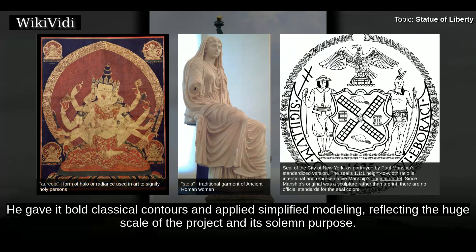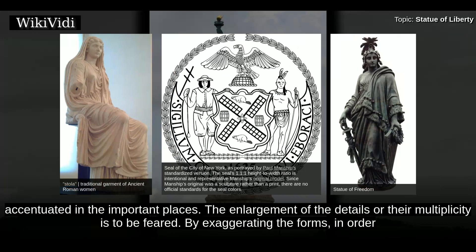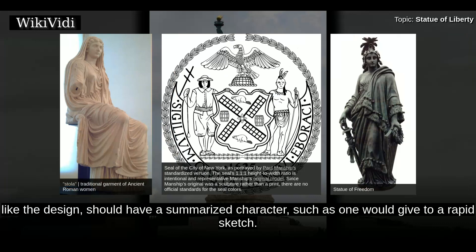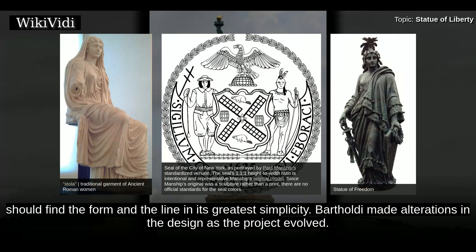He gave it bold classical contours and applied simplified modeling, reflecting the huge scale of the project and its solemn purpose. Bartholdi wrote of his technique: 'The surfaces should be broad and simple, defined by a bold and clear design, accentuated in the important places. The enlargement of the details or their multiplicity is to be feared. By exaggerating the forms in order to render them more clearly visible, or by enriching them with details, we would destroy the proportion of the work. Finally, the model, like the design, should have a summarized character, such as one would give to a rapid sketch. Only it is necessary that this character should be the product of volition and study, and that the artist, concentrating his knowledge, should find the form and the line in its greatest simplicity.'